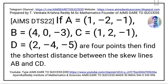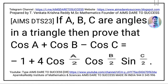Question 22: If A = (1, −2, −1), B = (4, 0, −3), C = (1, 2, −1), and D = (2, −4, −5) are four points, then find the shortest distance between the skew lines AB and CD. This question is from Product of Vectors.